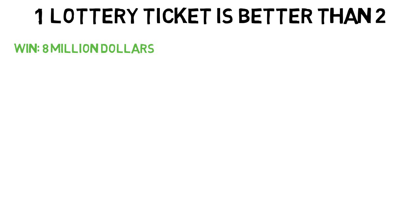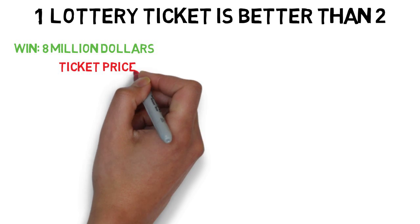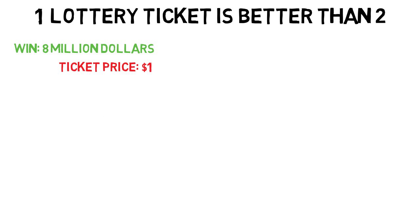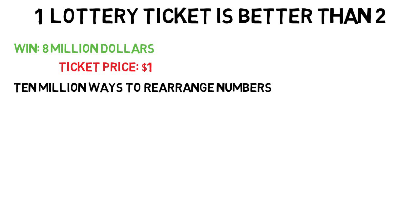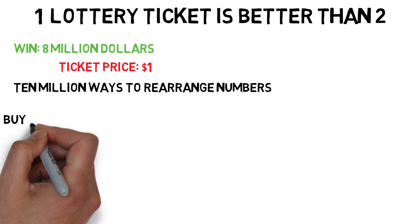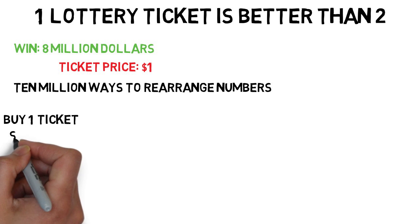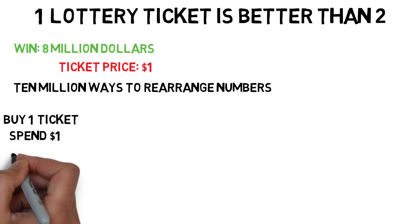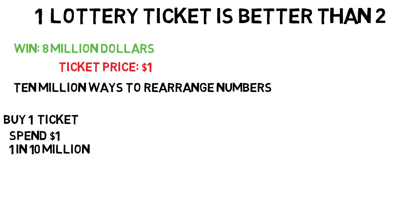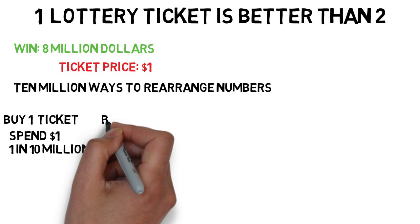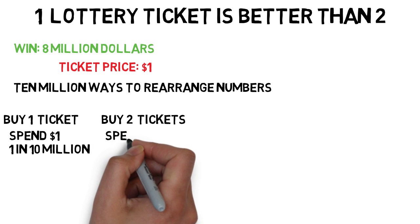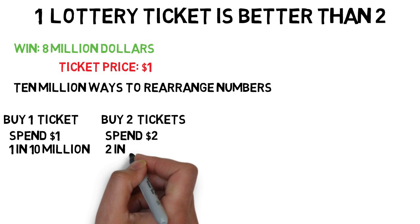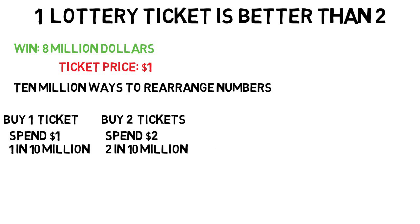Each ticket is one dollar, and each ticket has a combination of numbers — there are 10 million total ways to rearrange the numbers that will be selected. So if you buy one ticket, you spend one dollar and have a 1 in 10 million chance of winning 8 million dollars. If you buy two tickets, you spend 2 dollars and have a 2 in 10 million chance of winning that same amount. That seems better, right?